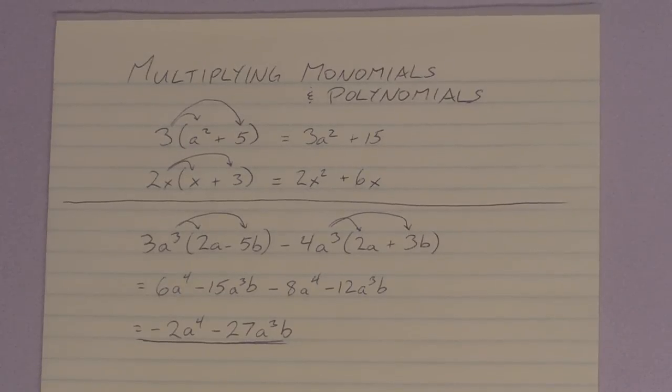That's as far as we can take it. No other like terms to collect. That's multiplying monomials times polynomials. Everything we've done before, multiplying monomials, collecting like terms, it can just look very ugly.